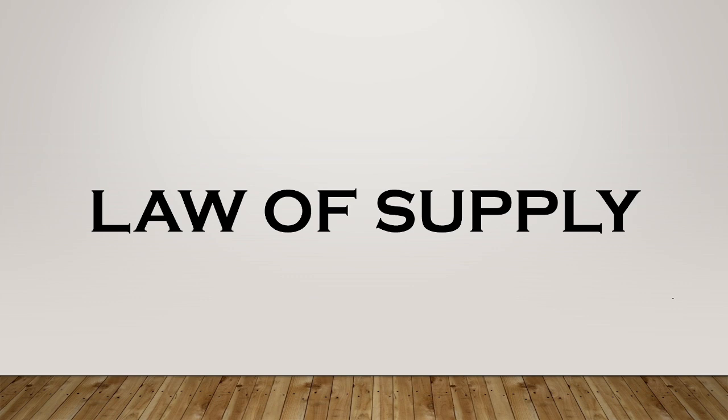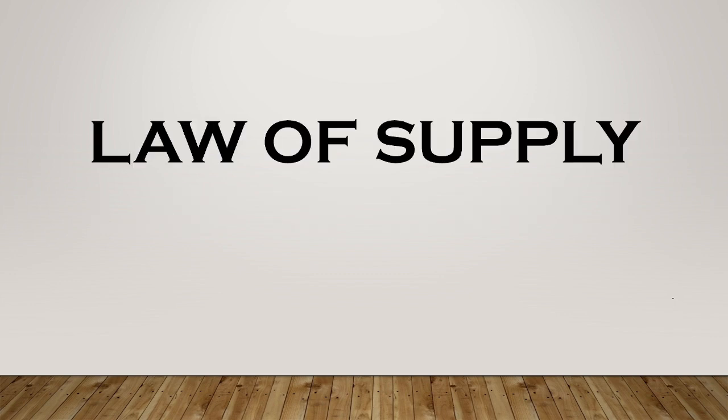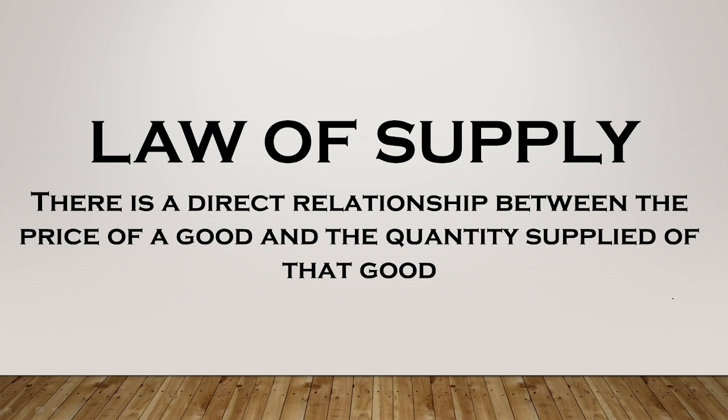Okay, good morning, good afternoon, good evening. So today I will again talk about the law of supply. The law of supply says that there is a direct relationship between the price of a good and the quantity supplied of that good. So for example, if the price goes up, the quantity supplied will also go up. If the price goes down, the quantity supplied will also go down.